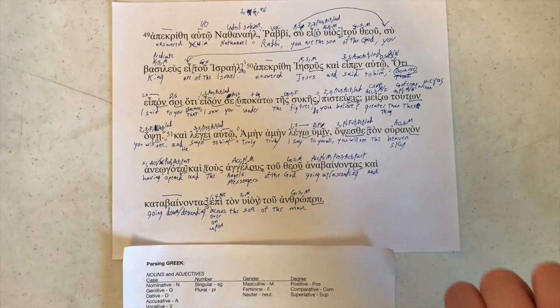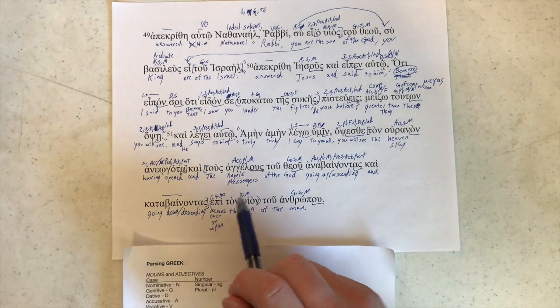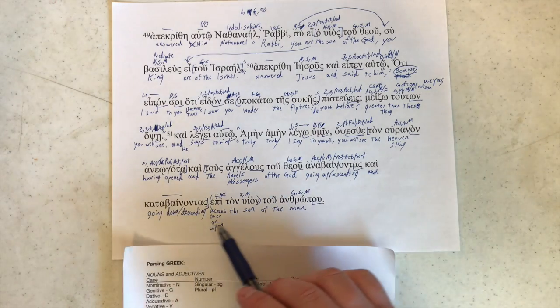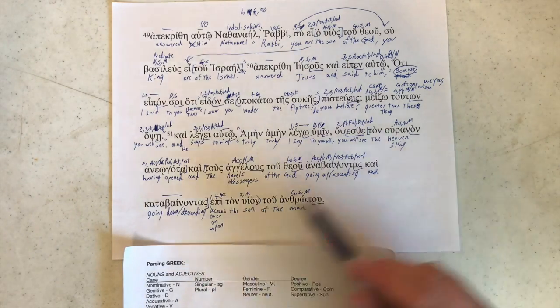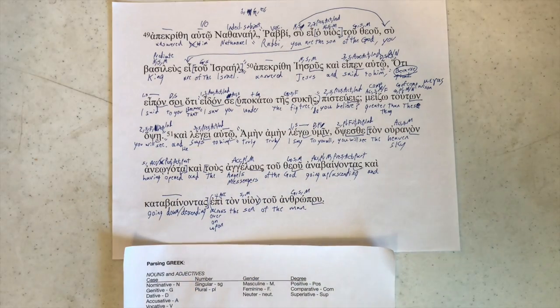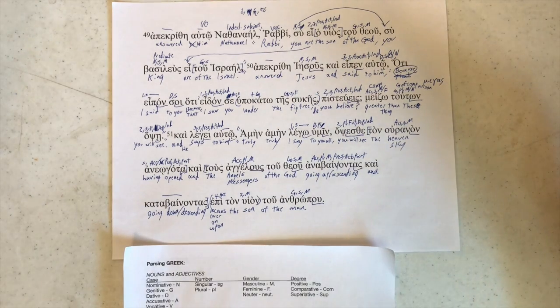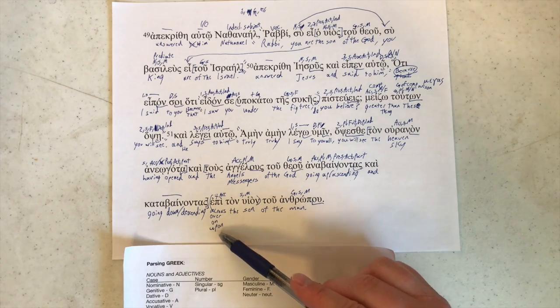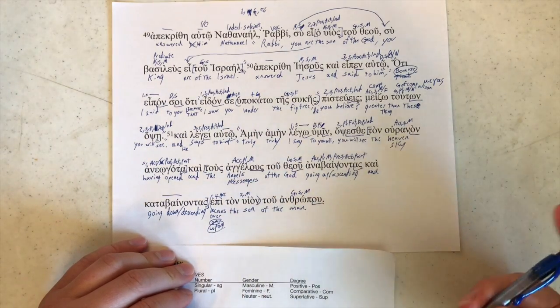Now to figure out which one of these four makes the most sense. You will see the sky having opened and the messengers or angels of the god ascending and descending across the son of the man. Or ascending and descending over the son of the man. Or ascending and descending on the son of the man. Or ascending and descending upon the son of the man. Any of them could work. Not sure that there's a major change in the actual meaning of it. Since the sky is up, across probably doesn't fit. Over, and not so much. On or upon are probably our two best options. So this one or this one I think makes the most sense.